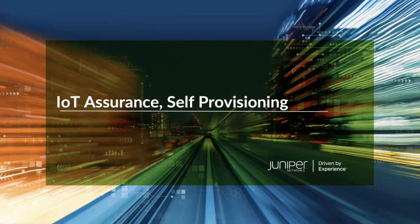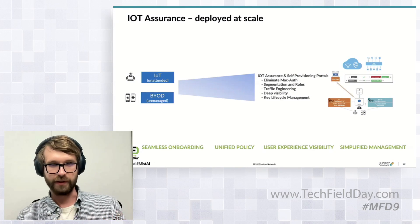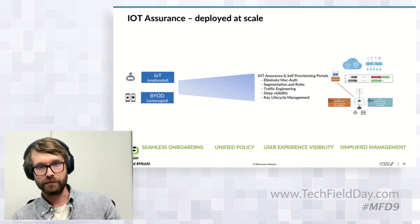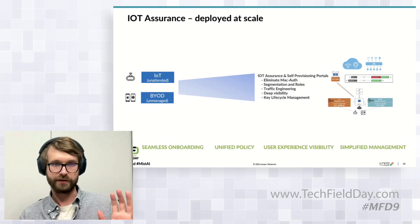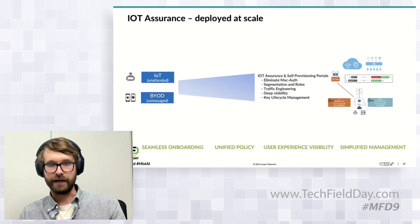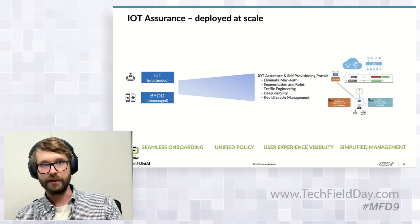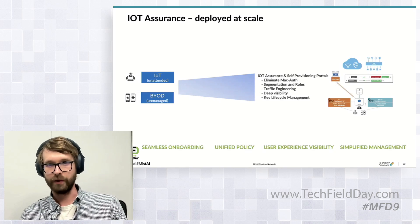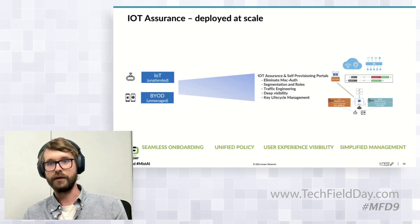We'll talk about IoT Assurance and self-provisioning. As Sanjay said in the beginning, we've shown this the last couple of years. IoT Assurance service was designed to solve two specific use cases around access control: one is for IoT or unattended devices, and the other is for BYOD unmanaged device access to the network. We are leveraging multiple pre-shared key concepts, deploying this at scale, and eliminating MAC addresses from the equation — letting the device onboard based on which PSK the client is using.